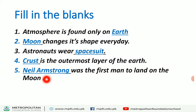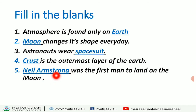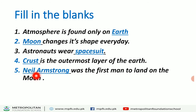Fifth blank: Who was the first person to land on the Moon? Neil Armstrong — N-E-I-L, A-R-M-S-T-R-O-N-G. So the five answers are: first blank — Earth; second — Moon; third — Space Suit; fourth — Crust; fifth — Neil Armstrong. Do this in your copy in very neat writing.